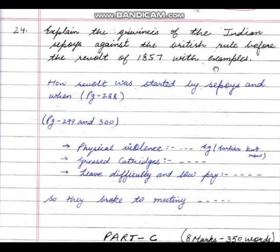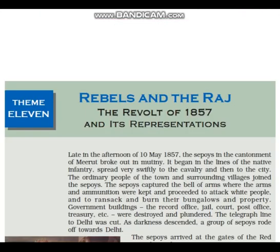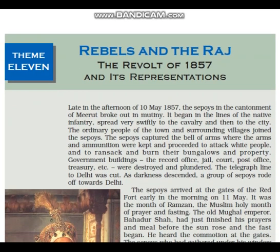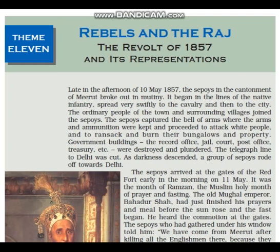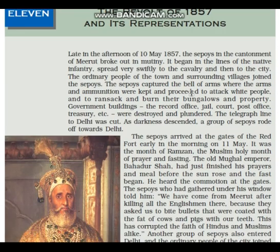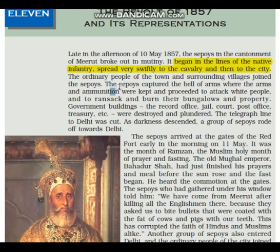Introduction: 'The revolt of the sepoys began in the lines of native infantry, spread swiftly to cavalry and then to the city. The sepoys captured the bells of arms where arms and ammunition were kept, and proceeded to attack the white people.' This is a small introduction. After this write: 'Grievances of sepoys were:'